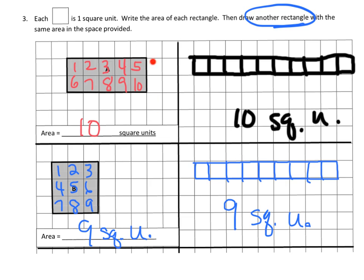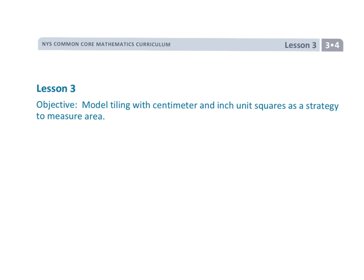Going back to the ten-square-unit rectangle, there's another rectangle students could have drawn — two across and five down. Sometimes students will say that's the same rectangle as the one-by-ten, only rotated, and for this lesson that's fine, it counts. That is Grade 3 Module 4 Lesson 3, where we are using the tiling strategy to measure area.